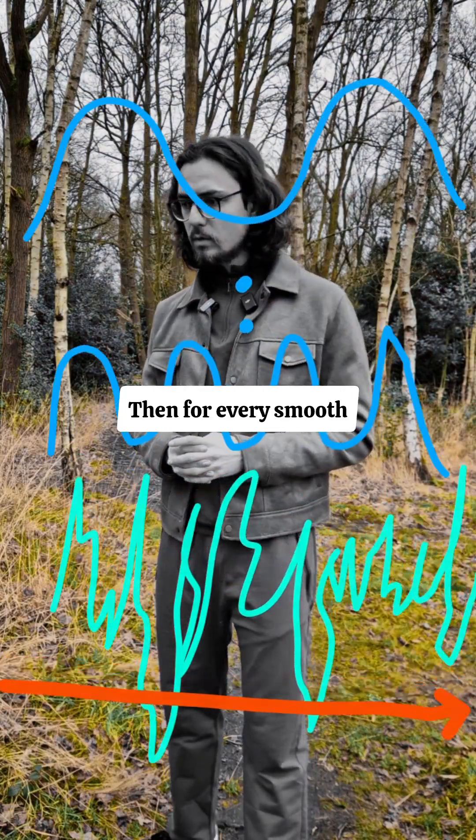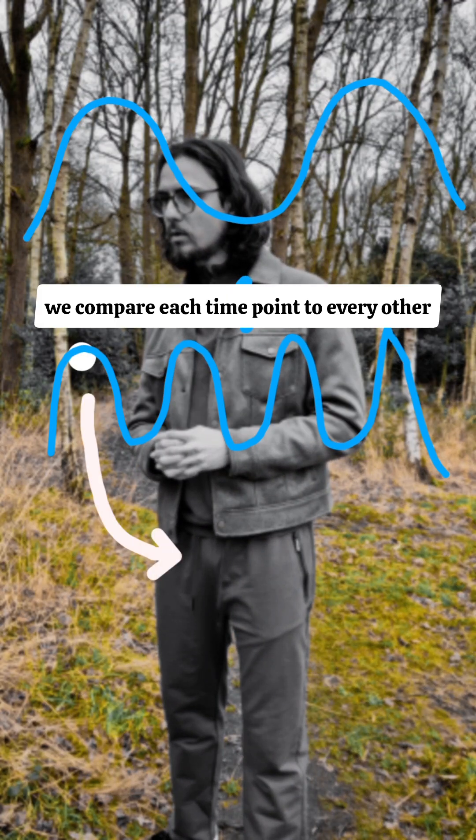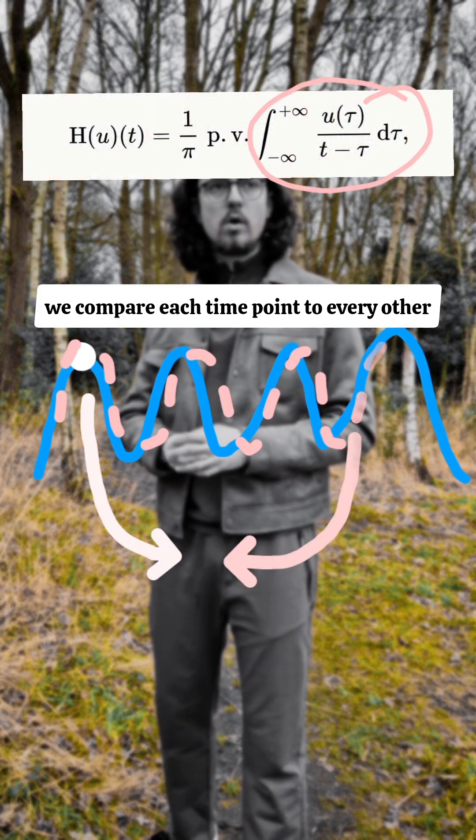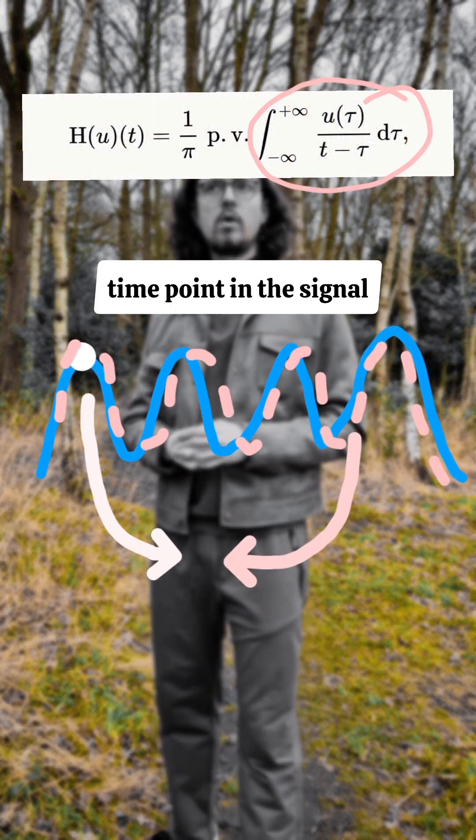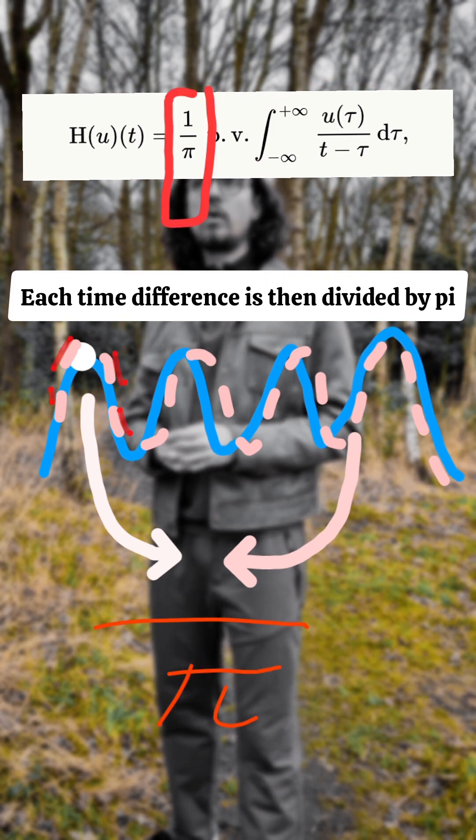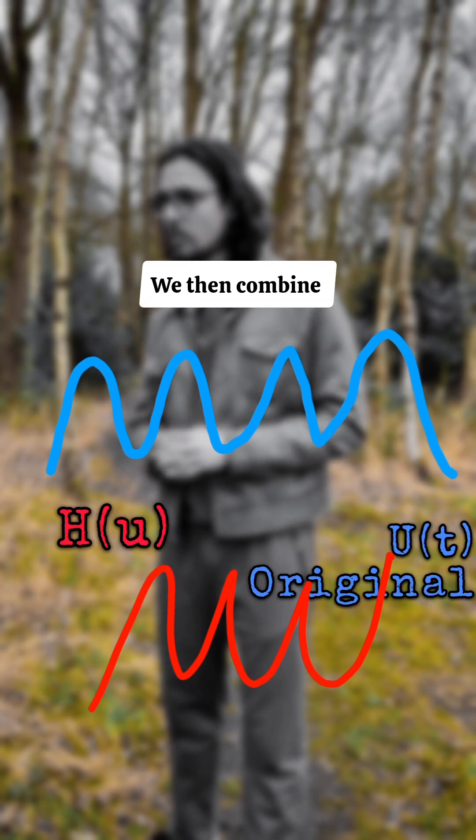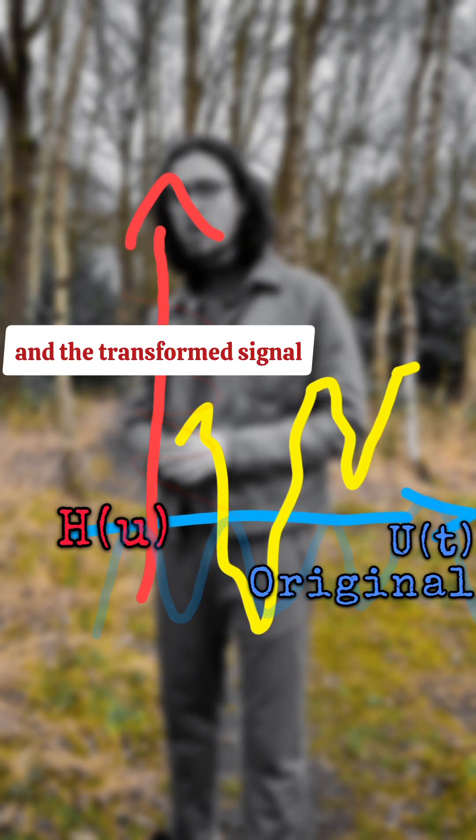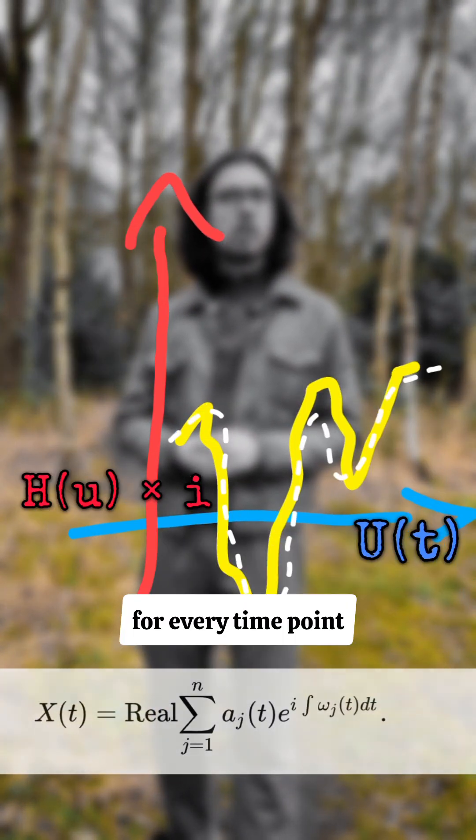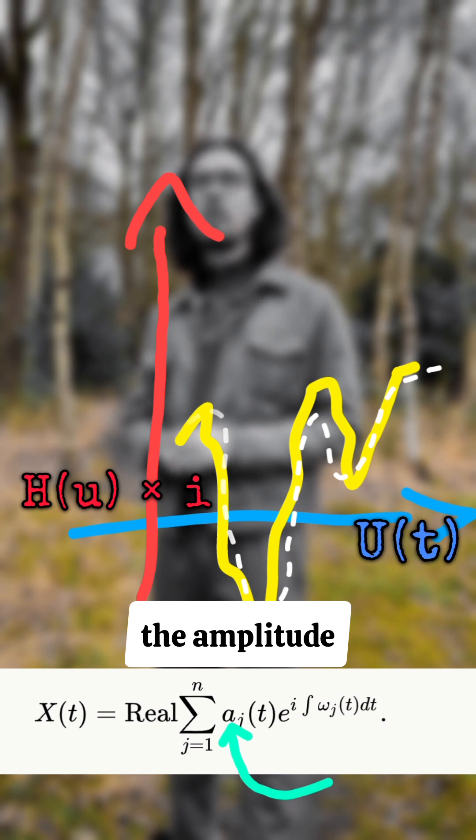Then, for every smooth and monotonic signal identified, we compare each time point to every other time point in the signal. Each time difference is then divided by pi to emphasize nearby time differences. We then combine the original signal and the transformed signal and calculate for every time point the amplitude and the frequency for the entire recording.